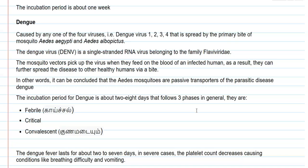The vector behind the spread of the disease is mainly mosquitoes belonging to Aedes aegypti as well as Aedes albopictus. The pathogen is the Dengue virus, which is a single-stranded RNA virus that belongs to the family Flaviviridae. The mosquito vectors pick up the virus when they feed on the blood of an infected human, and further when they bite a new human, the virus spreads from one person to another.